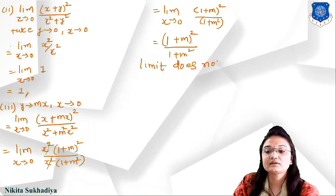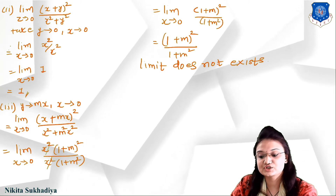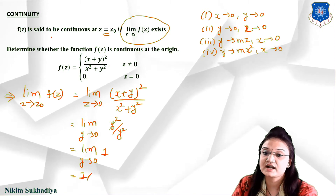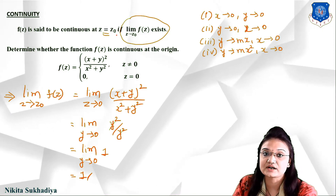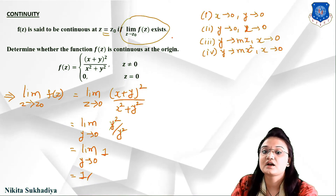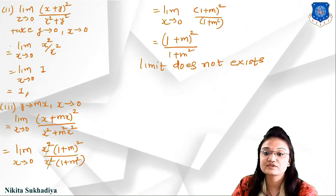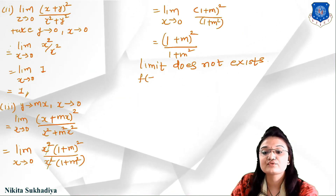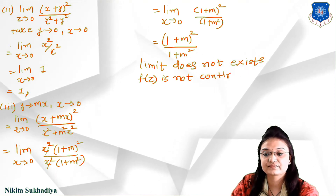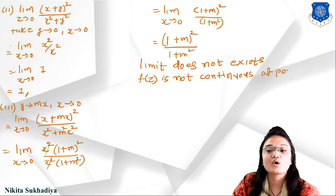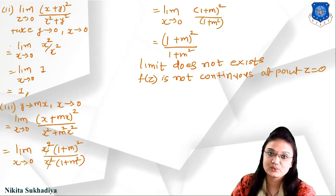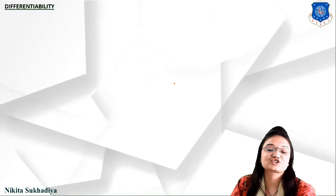According to the definition of continuity, f(z) is continuous at z = z₀ if the limit as z→z₀ of f(z) exists. But here our limit does not exist, so we can say that this function f(z) is not continuous at the point z = z₀ = 0.